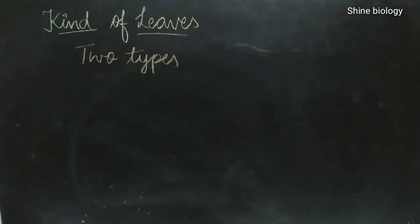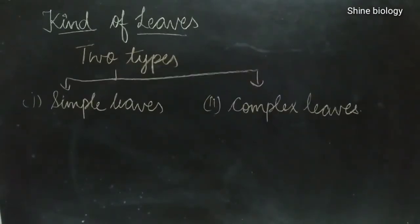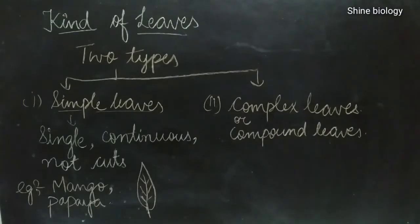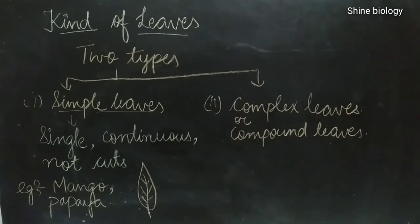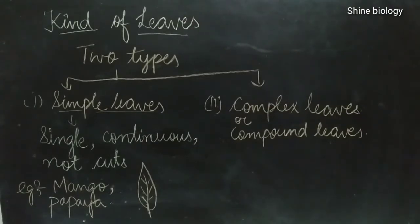Next are the kinds of leaves. There are two main types: simple leaves and compound leaves. Simple leaves are single and continuous with no cuts — a single leaf present on a branch. As shown diagrammatically, there is no deep cutting. A simple leaf has a midrib, veins, etc. Examples of plants with simple leaves include banana, mango, and papaya.